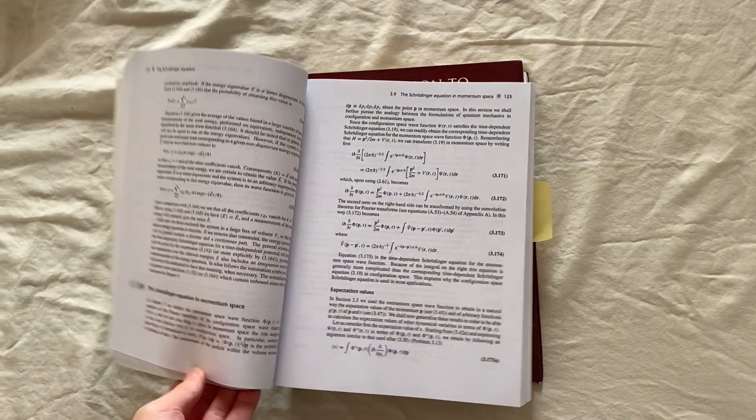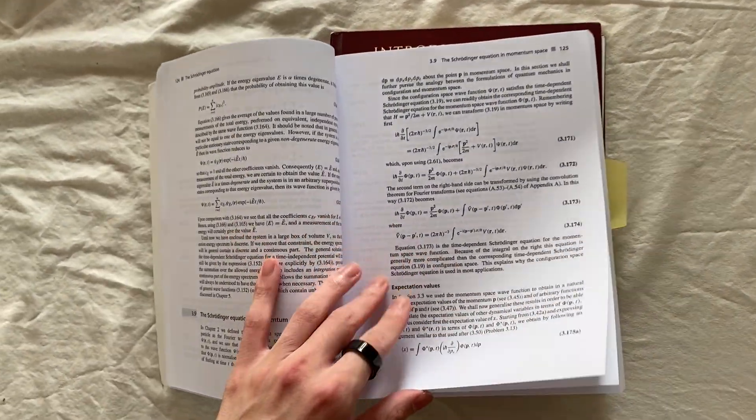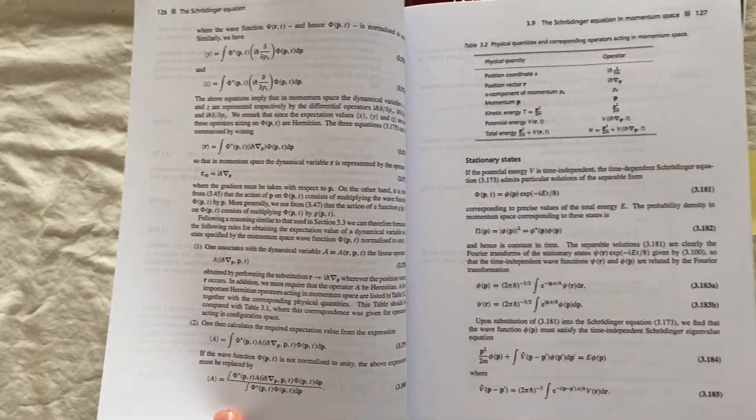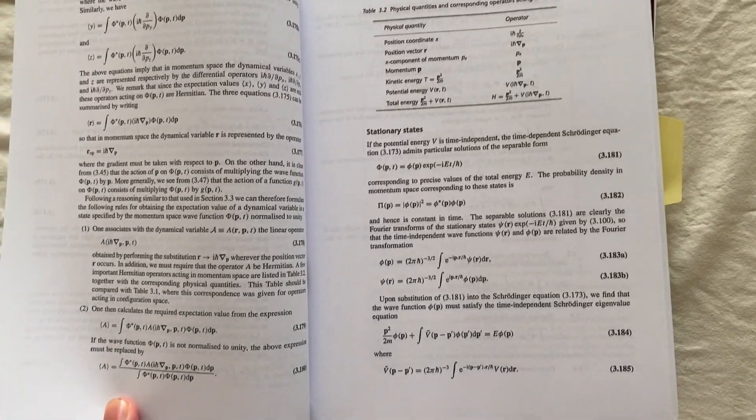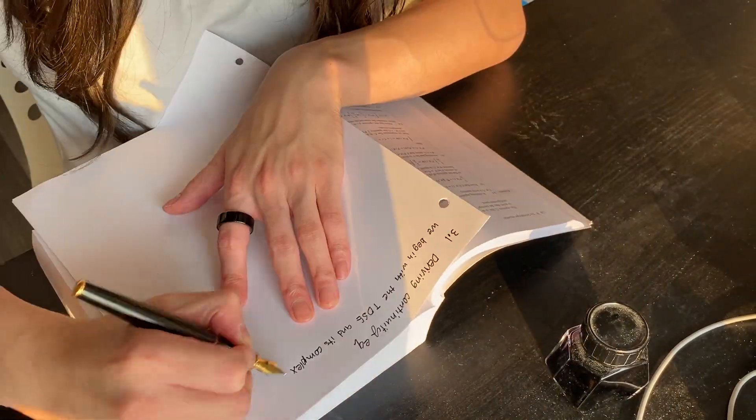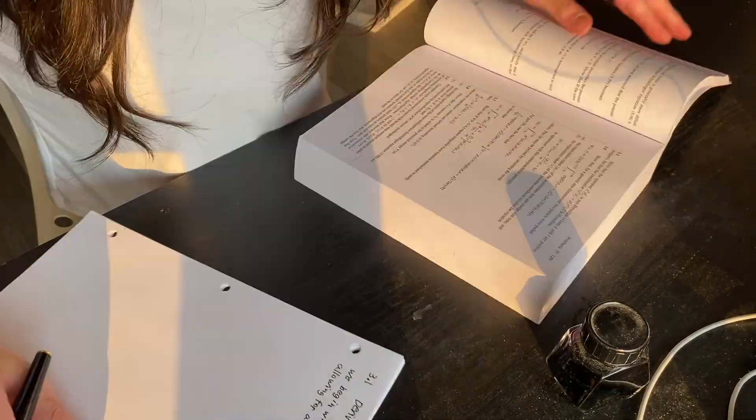For quantum mechanics, I like Branson. It's a step up from Griffiths, who also made a QM book. It's very packed with derivations, and its formal approach keeps you engaged.